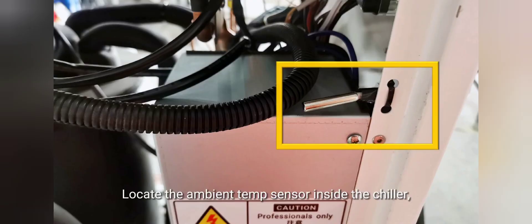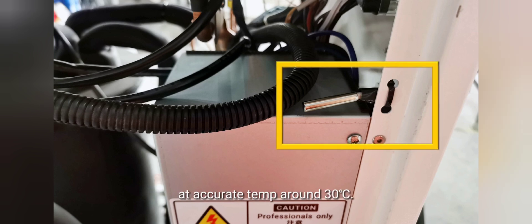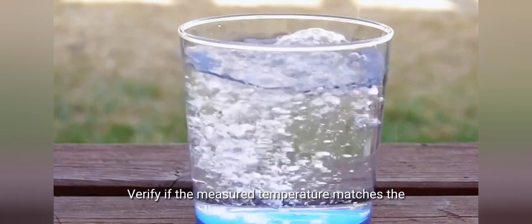Locate the ambient temp sensor inside the chiller. Then perform constant temperature testing by placing the sensor in water at accurate temp around 30 degrees Celsius, verifying if the measured temperature matches the actual value.